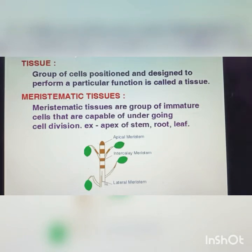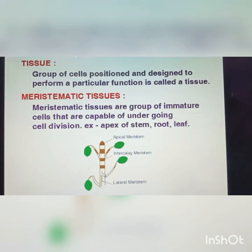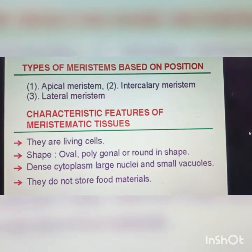See the diagram — we have a flowchart showing three types of meristematic tissue: apical meristem, intercalary meristem, and lateral meristem. Apical meristem is located at the tip of the stem. Intercalary meristem is found in the nodal region where leaves arise, responsible for stem elongation. Lateral meristem is found along the sides of the stem. Types of meristems based on position: apical meristem, intercalary meristem, and lateral meristem.